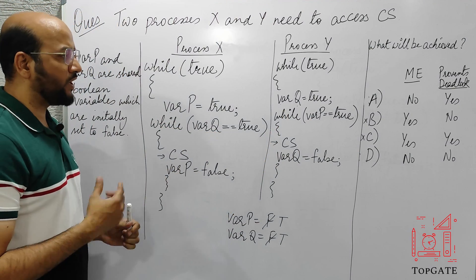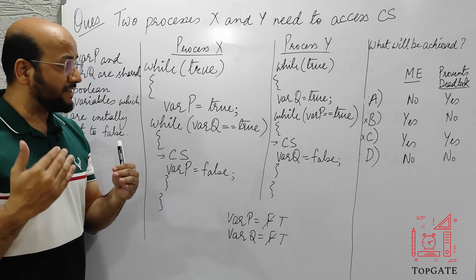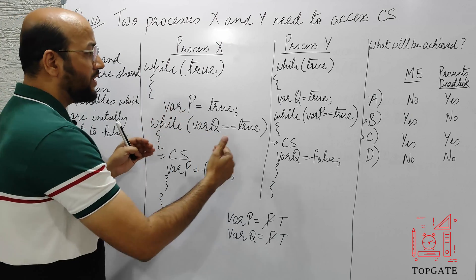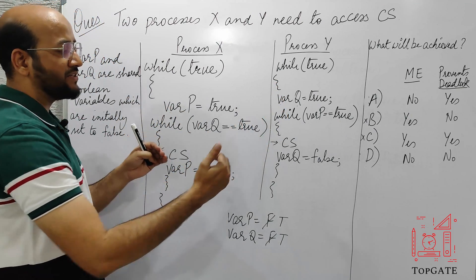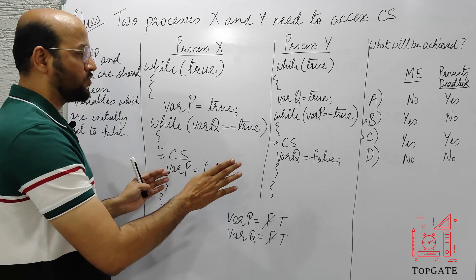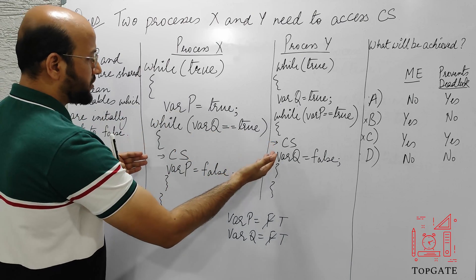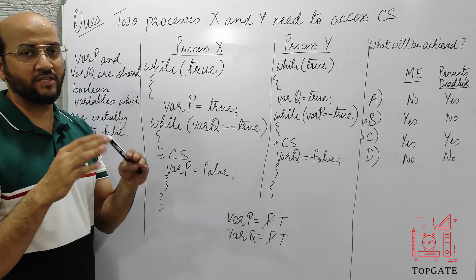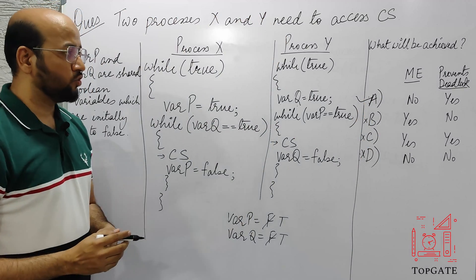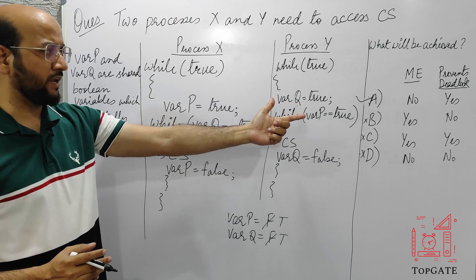Deadlock means both processes want to enter the critical section but neither is able to — the system cannot proceed. However, in this case, both processes tried to enter the critical section at the same time and both succeeded. So there is no deadlock. The system is continuously executing. Hence it is preventing deadlock, and the correct answer is A.